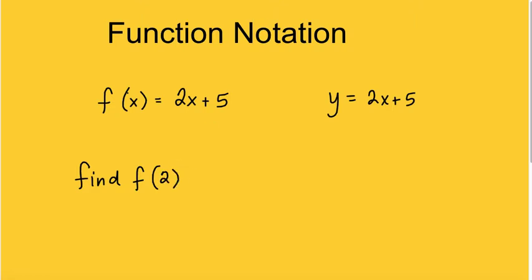Well, all that means is that the input, because the input is always where the x is, the input is 2, and it wants the output. So I would take that 2 input, I'd plug it in for x, and I'd simplify. So I get 4 plus 5, which is 9. So f at 2 equals 9. 9 is the output. That actually represents the coordinate point 2, 9.